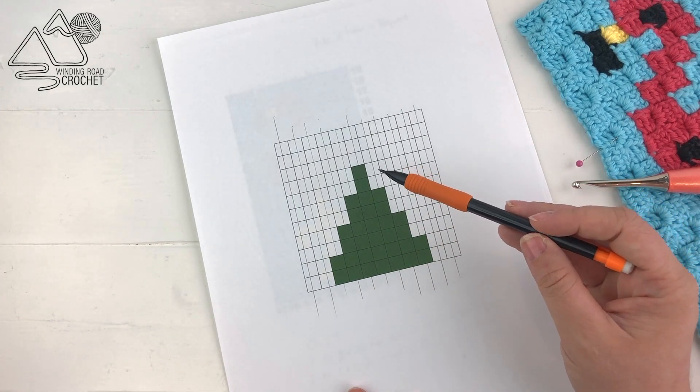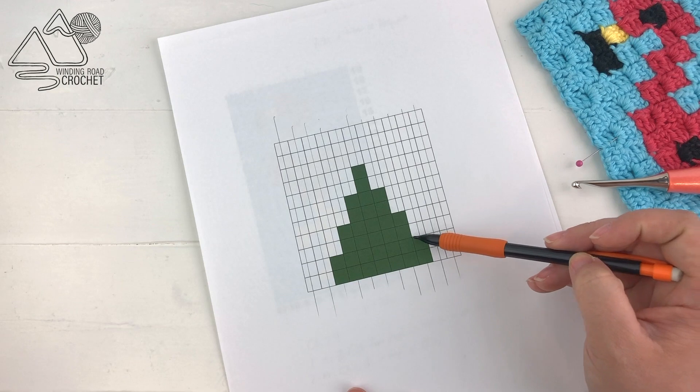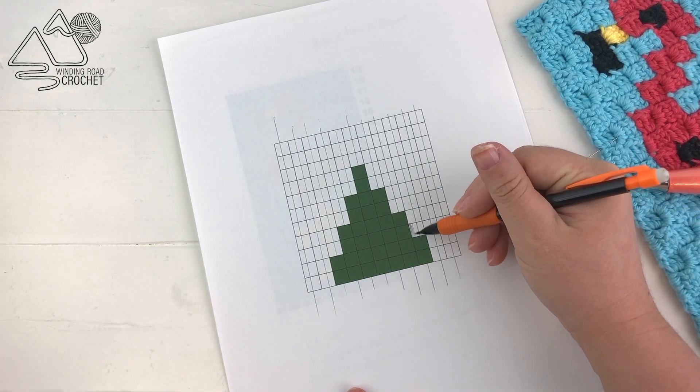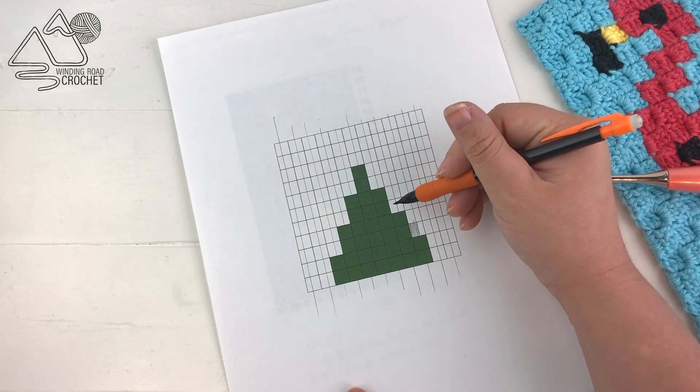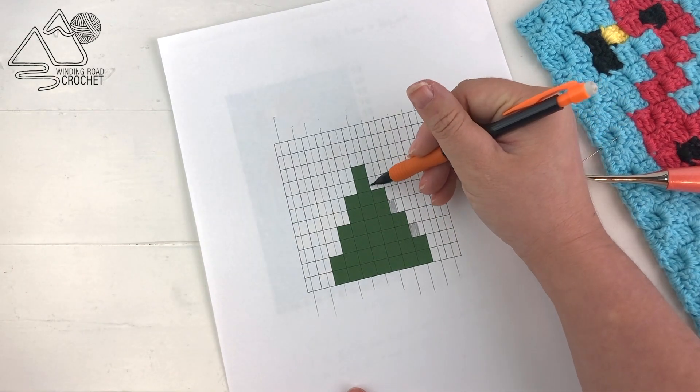Now if I was working this as a double crochet, because there are two double crochet for every square, I have the ability to improve the angle of this little mountain here. So what I would do is go ahead and add a few extra double crochet in the green right here on top of these steps.